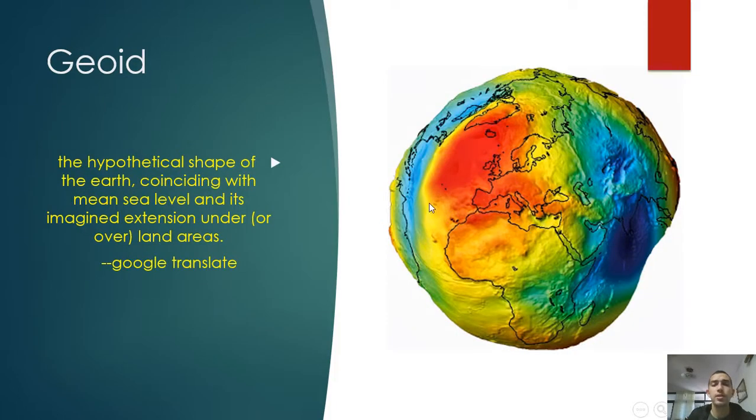So what is this yellow shape? This yellow shape is called a geoid, the hypothetical shape of the earth coinciding with mean sea level and its imagined extension under and over land areas. This is from Google Translate.